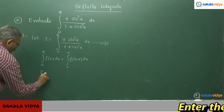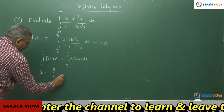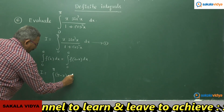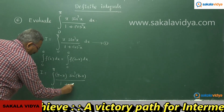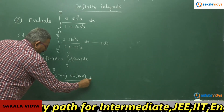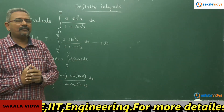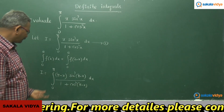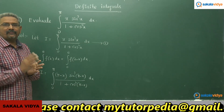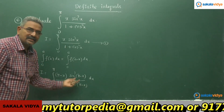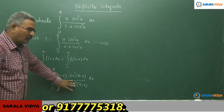We write I again as: integral from 0 to pi of (pi minus x)·sin³(pi minus x) divided by (1 + cos²(pi minus x)) dx. Here the trigonometric formulae are to be applied carefully. sin(pi minus x) equals sin x, and cos(pi minus x) equals minus cos x, but since we have it squared, we get positive cos²x only.